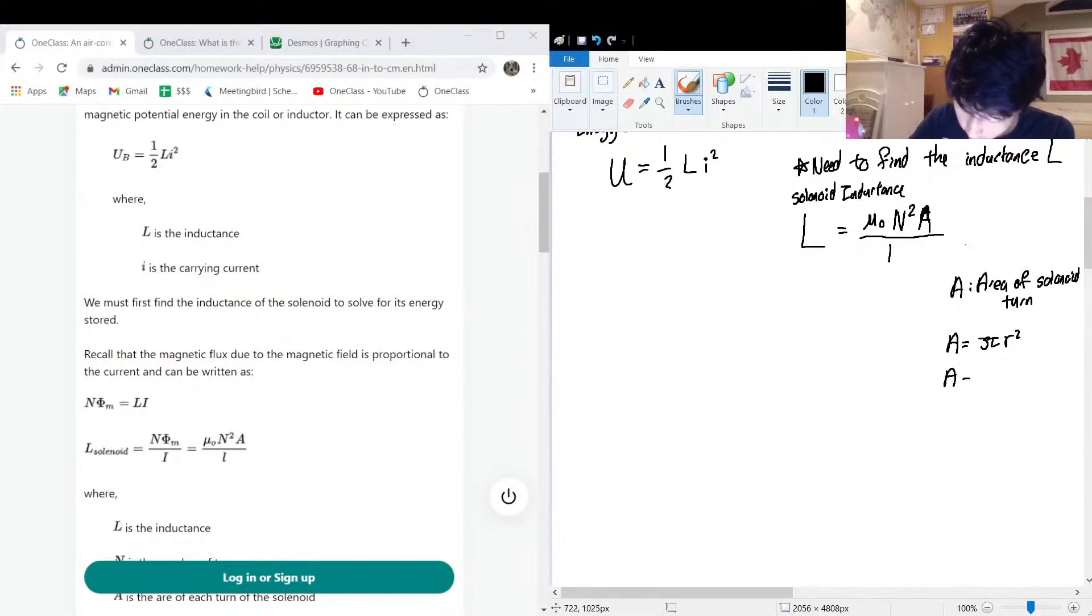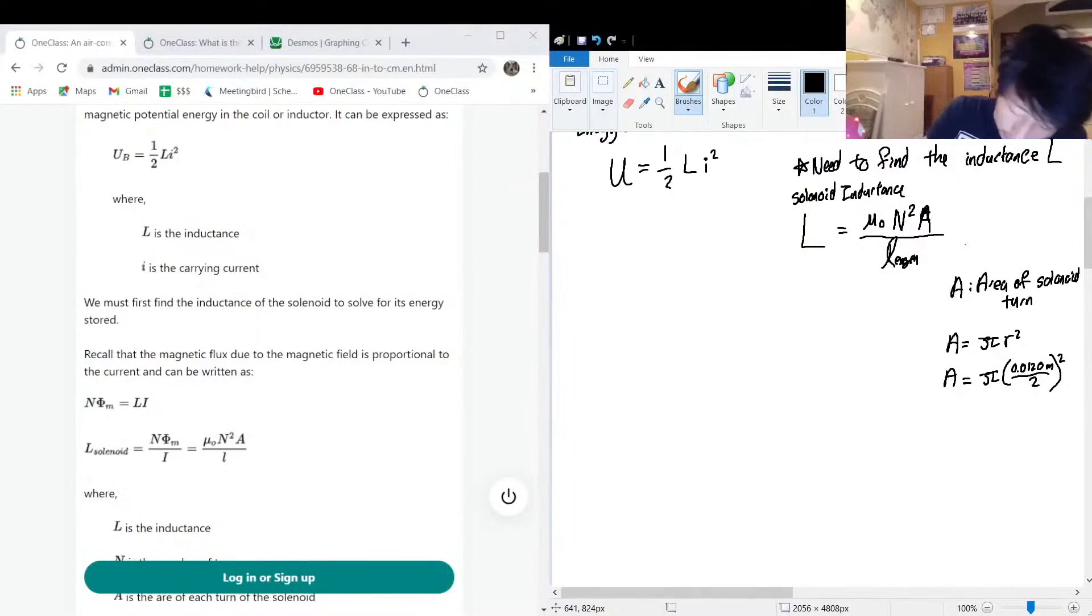Area is just going to be pi times 0.0120 meters over 2 squared. And we can actually just sub that in and then we can solve for this down here is the length. So let's sub in our values.